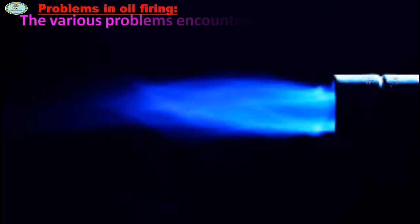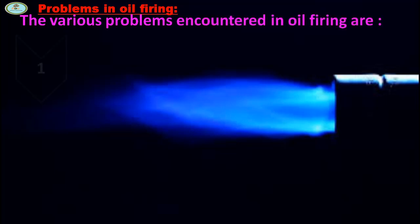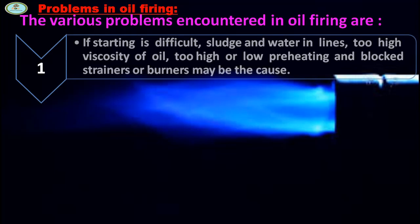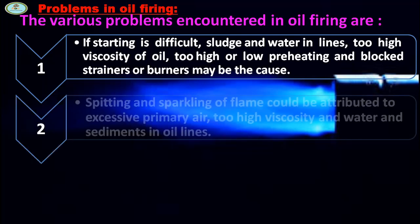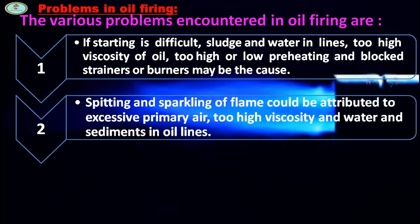The various problems encountered in oil firing are as follows. If starting is difficult, sludge and water in lines, too high viscosity of oil, too high or low pre-heating, and blocked strainer or burner may be the cause. Splitting and sparking of flame could be attributed to excessive primary air, too high viscosity, and water and sediments in oil lines.